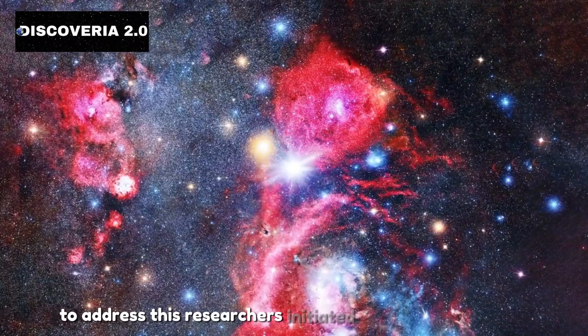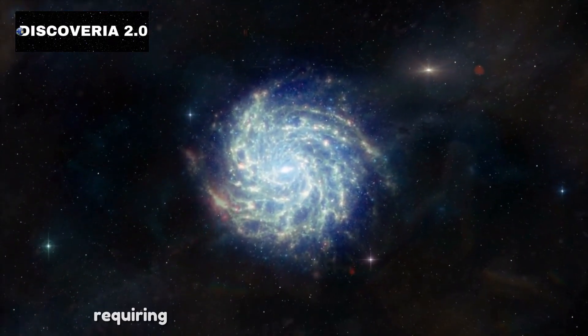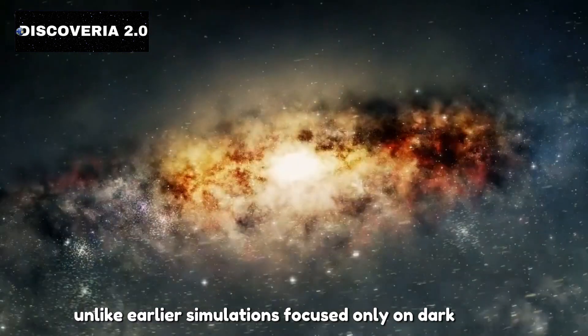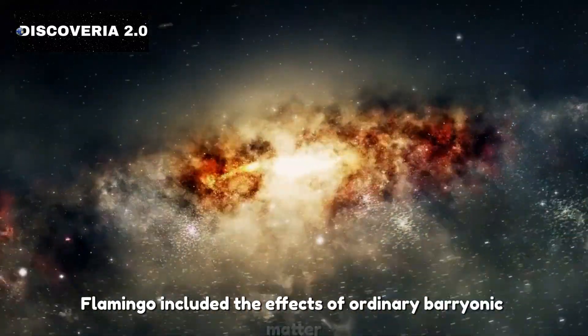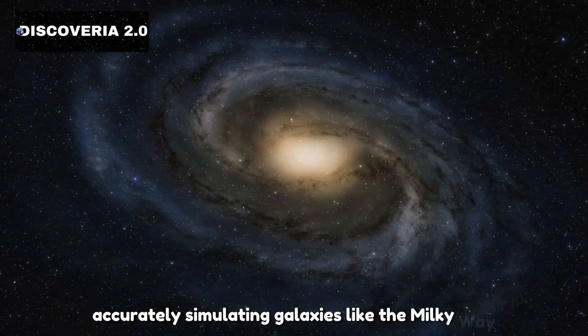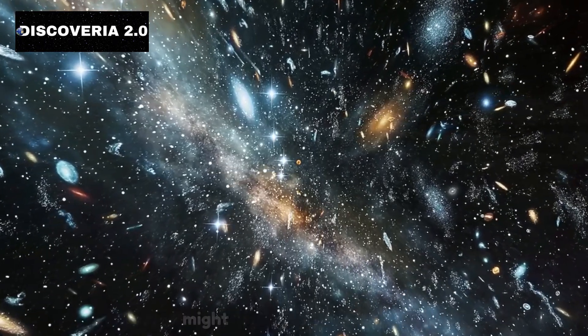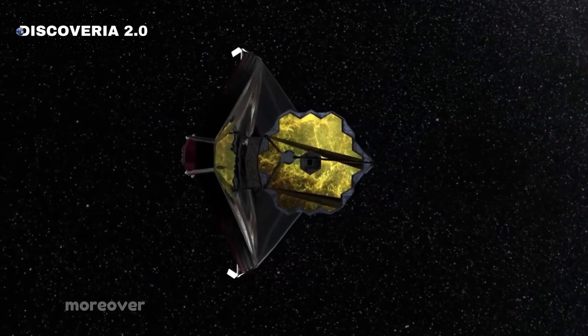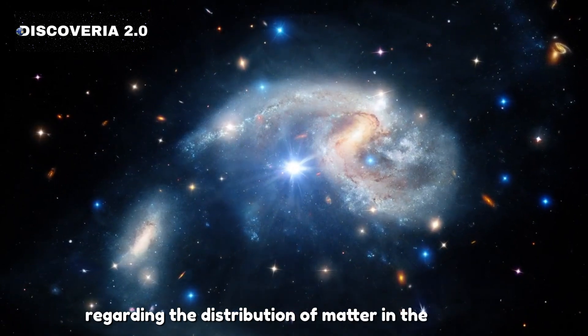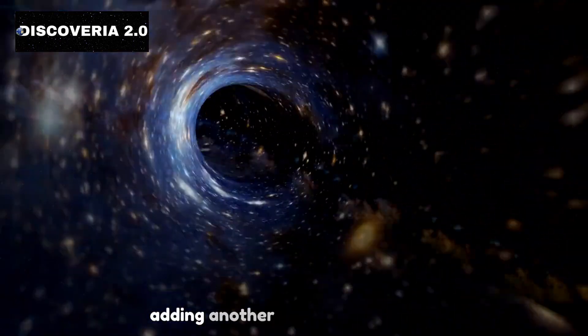To address this, researchers initiated the Flamingo Project, one of the largest cosmological simulations ever conducted, requiring over 50 million hours of computing time. Unlike earlier simulations focused only on dark matter, Flamingo included the effects of ordinary baryonic matter. While the project succeeded in some aspects, accurately simulating galaxies like the Milky Way, it couldn't resolve the S8 Tension. It even hinted that our standard cosmological model might need serious revision. Moreover, Flamingo's results conflict with Webb Telescope observations regarding the distribution of matter in the universe. It appears galaxies are 5 to 7 percent less clumped than our models predict, adding another layer of complexity.